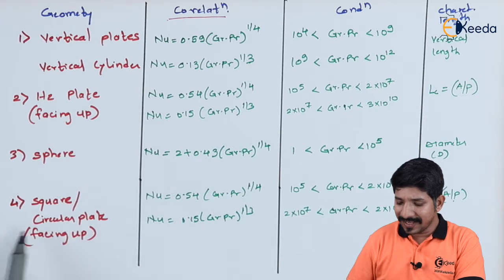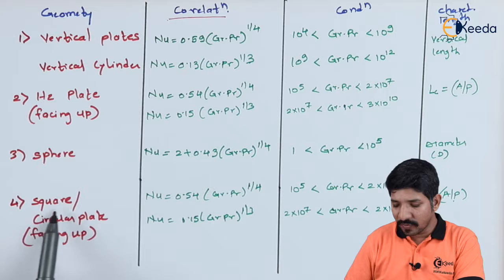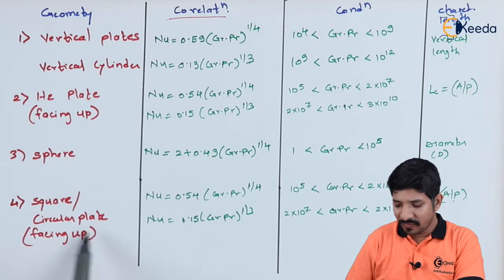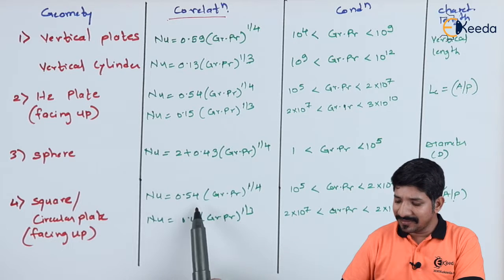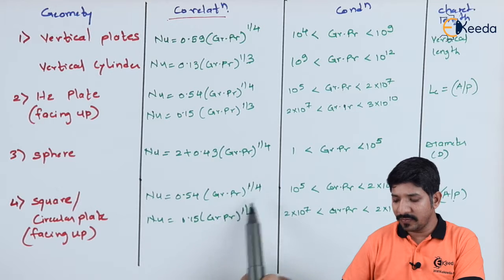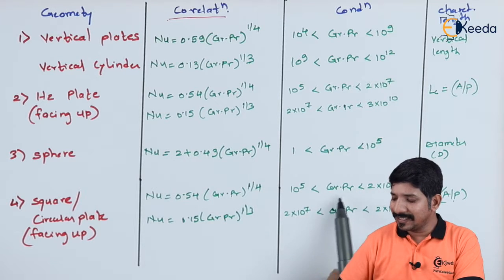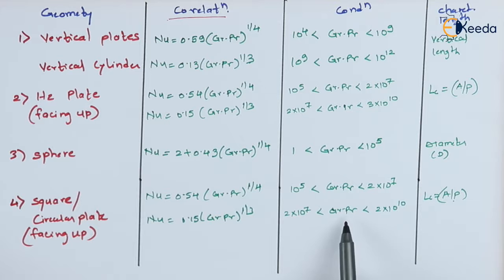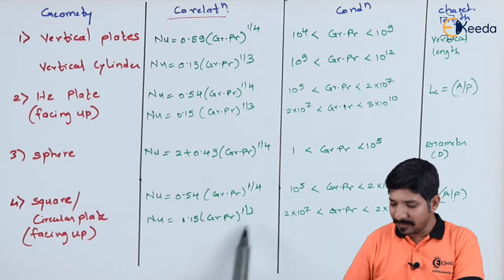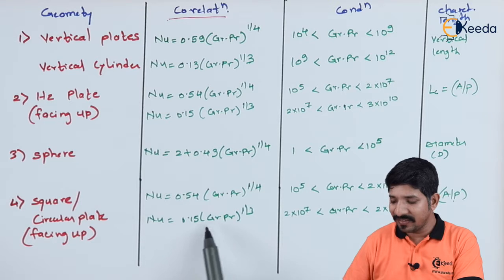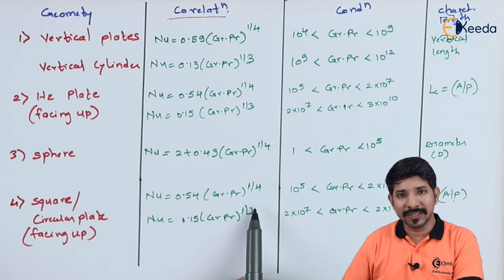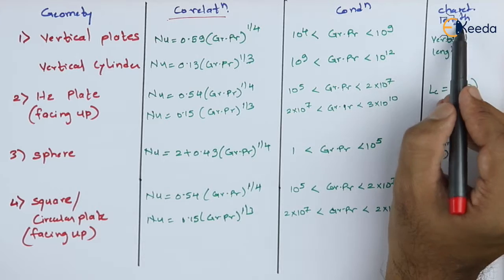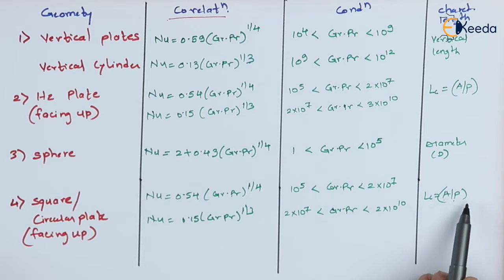For a square or circular plate facing up, the Nusselt number is given as 0.54 times Rayleigh's number raised to 1/4 when the Rayleigh's number is between 10^5 and 10^7. Similarly, if the Rayleigh's number is between 10^7 and 10^10, the Nusselt number is given as 0.15 times Rayleigh's number raised to 1/3. In this case the characteristic length is also given as A/P.